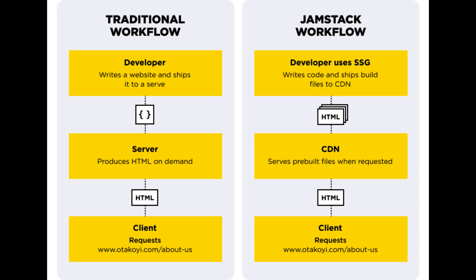Jamstack versus a traditional CMS — the major difference between a Jamstack website and a website built with a content management system is how tightly the content, code, and design are associated. With a CMS, everything is in the same system. There is a back-end interface where developers control all of the code and design templates. Content would similarly be created, updated, and managed from a back-end interface. It will all be kept in databases on a server, gathered by the server and delivered to the visitor once a page on the website is visited.